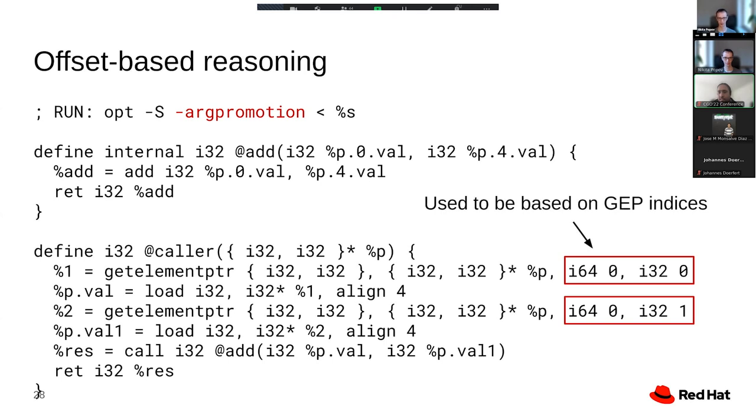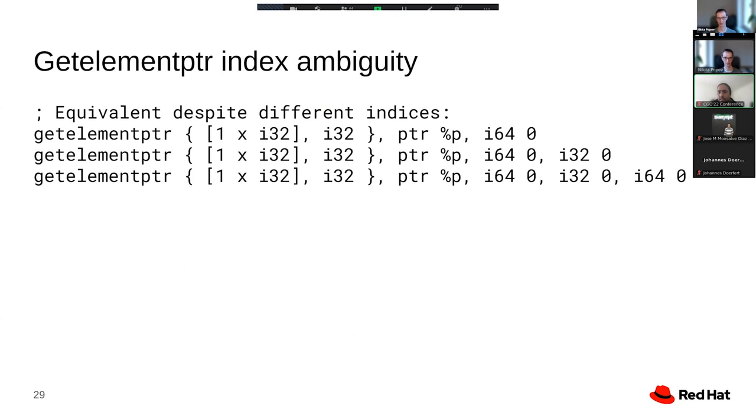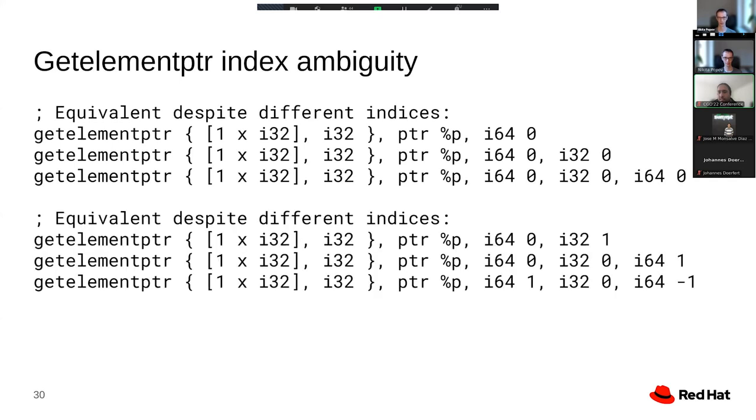The big problem with that kind of approach is that get element pointer indexes are not unique. The most obvious way in which they are not unique is that you can always add or remove zero indexes from the end. But if there are any array types involved, there is actually an essentially infinite number of ways you can encode the exact same address. So here, all three of these point to the second struct element. The first one does so directly, the second one does so by pointing to the end of the array, which happens to be at the same address as the start of the struct.